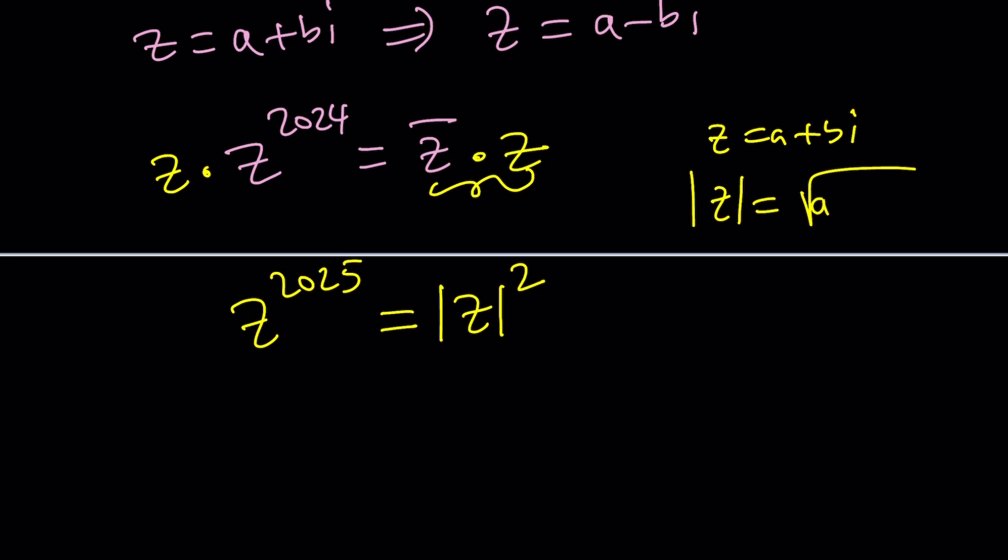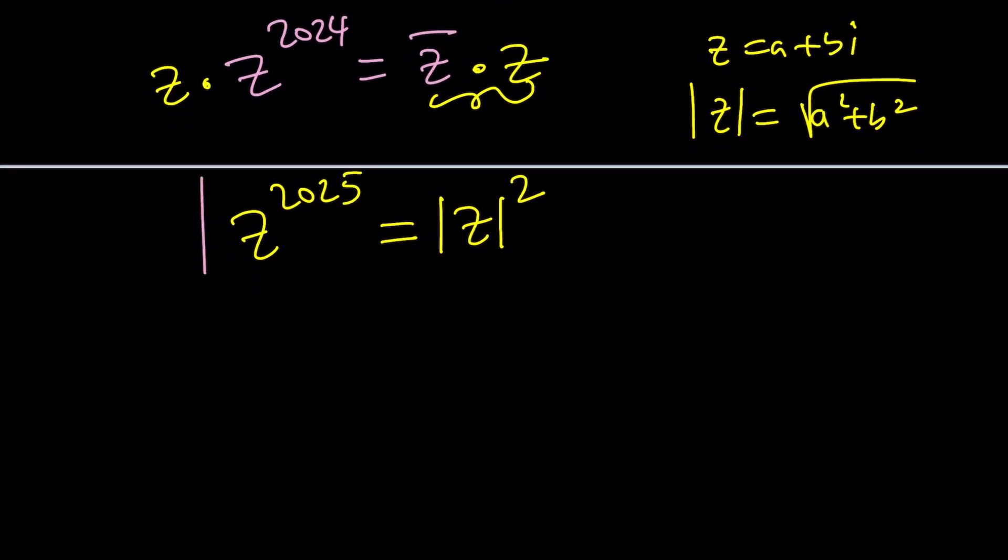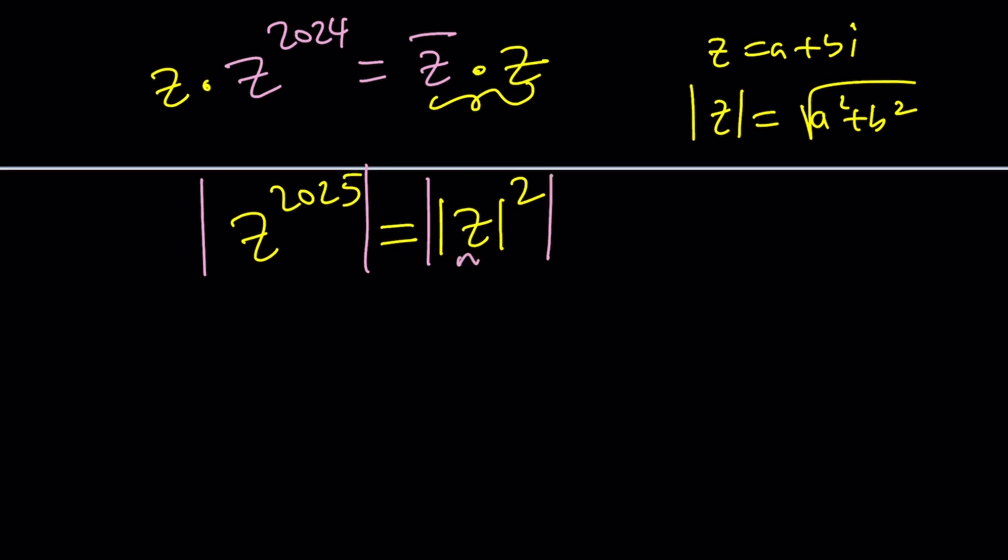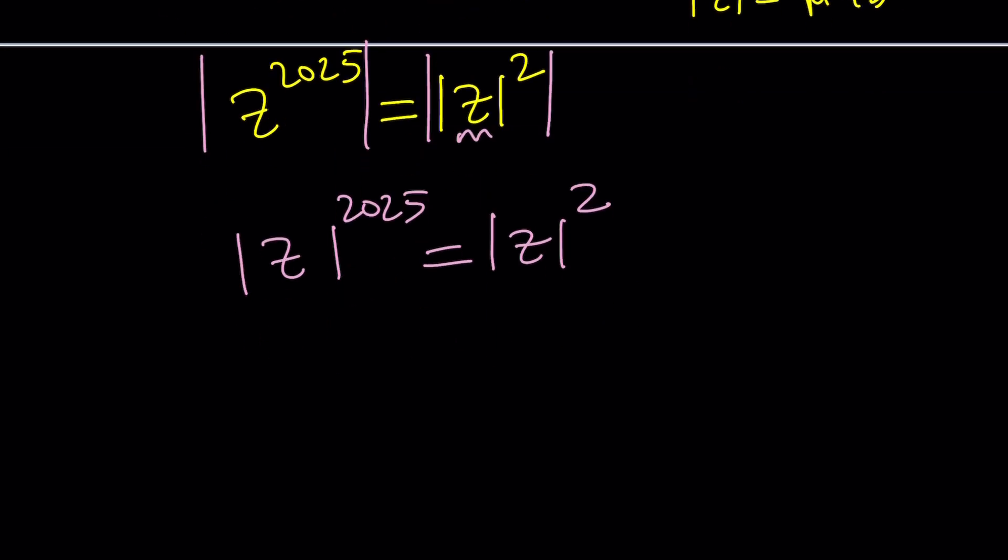You got to remember that. Because if z = a+bi, the absolute value of z is going to be the square root of a^2 + b^2. If you square both sides, you get that. Now, what is so important about this equation? Here's the thing. If you take the absolute value on both sides, because if two complex numbers are equal, their absolute values are also equal. There's no reason to take the absolute value twice, because this already makes it a real number.